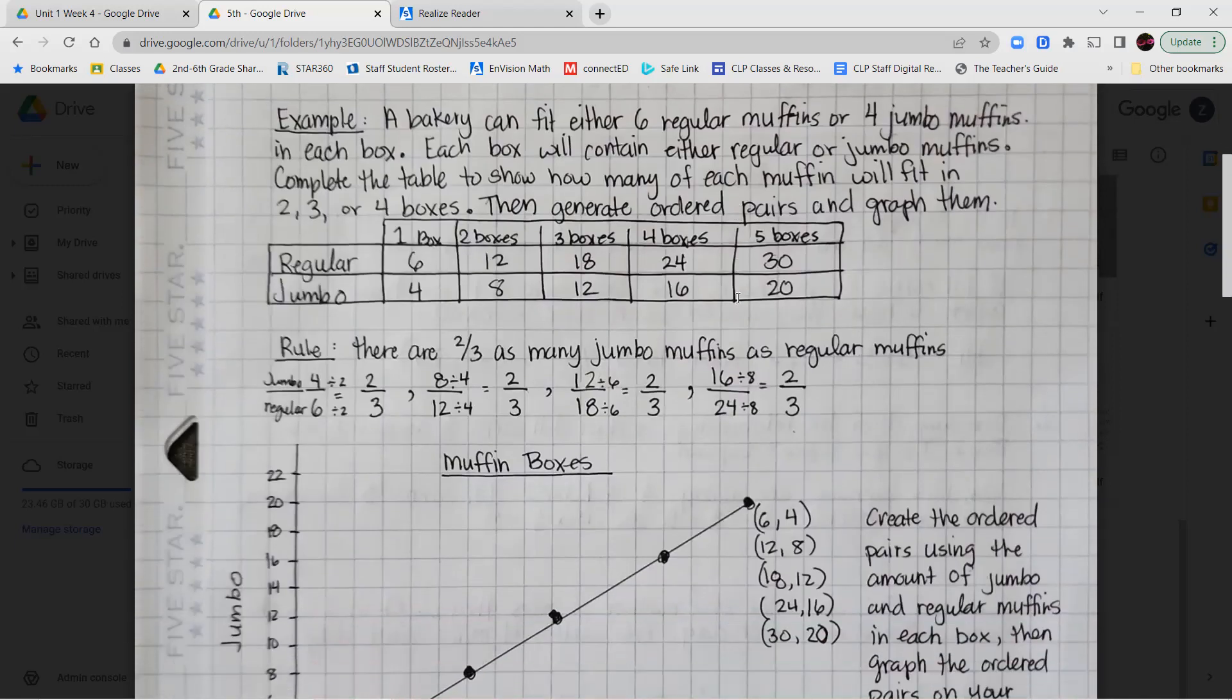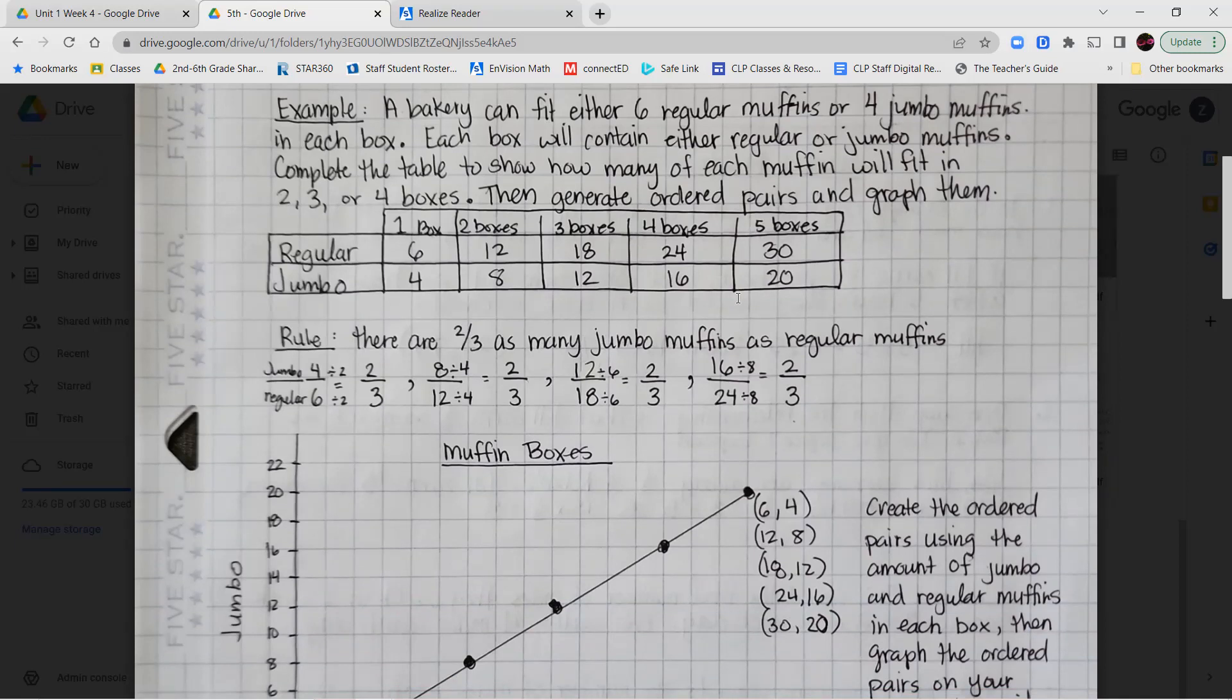So our first example says the bakery can fit either six regular muffins or four jumbo muffins in each box. Each box will contain either regular or jumbo muffins. That means there's no mix. It's going to have either all regular or all jumbo. Complete the table to show how many of each muffin will fit in two, three, or four boxes. Then generate ordered pairs and graph them.